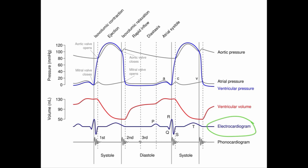When you have systole as indicated by the QRS, the ventricular volume first doesn't change because you have isovolumic contraction. Then, once the aortic valve opens — which is right here — you have a rapid decrease in ventricular volume as indicated by this down-sloping curve. Once the aortic valve is closed, you have ventricular relaxation that is isovolumic, so the volumes don't change.